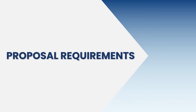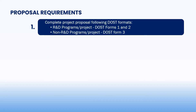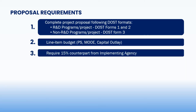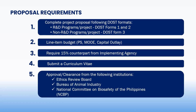The program or project leader shall submit the following documents: a complete project proposal following the DOST formats, a line item budget with 15% counterpart from the implementing agency, a Curriculum Vitae, and approval or clearance from relevant institutions — including ethics review for research involving human subjects, approval from the Bureau of Animal Industry for animal subjects, and clearance from the DOST Biosafety Committee for research proposals involving the use of GMOs.